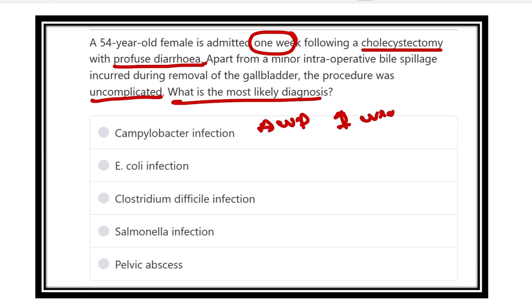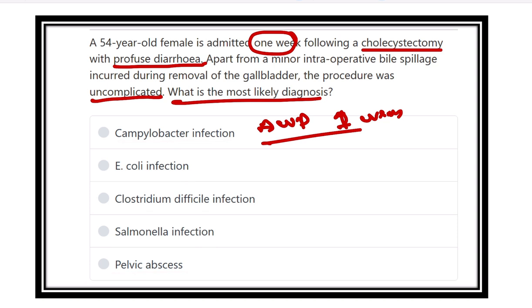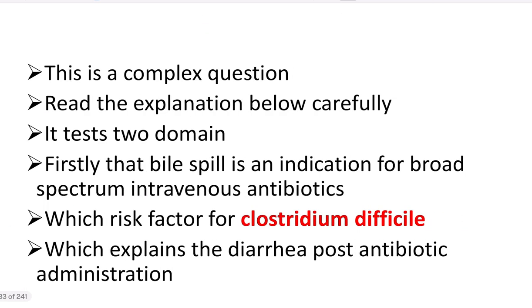What organism is responsible? The options are: Campylobacter infection, E. coli infection, Clostridium difficile infection, Salmonella infection, and pelvic abscess. The patient presents with only acute watery diarrhea after the operation, so it is confusing which is the correct answer. Let's review the different options — this is a complex question.